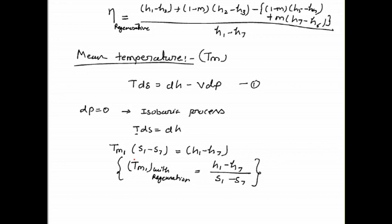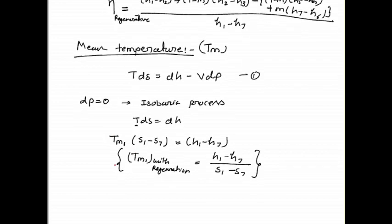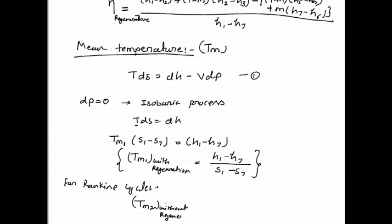The mean temperature with regeneration, Tm1, is derived as: Tm1 = (H1 minus H7) divided by (S1 minus S7). This is the mean temperature for the regeneration process. For the Rankine cycle without regeneration, the mean temperature Tm2 = (H1 minus H5) divided by (S1 minus S5). This is the mean temperature without regeneration.